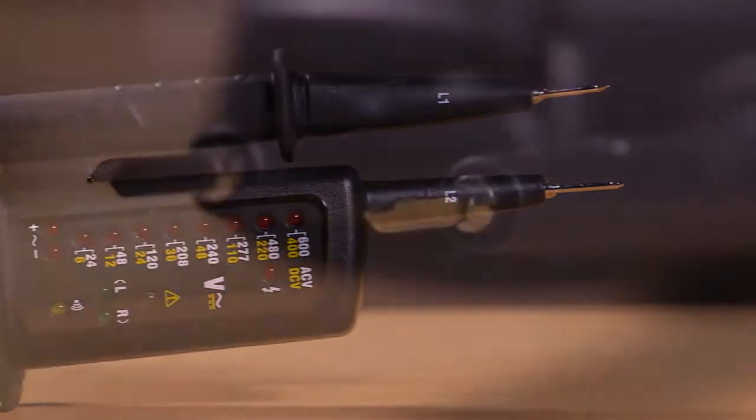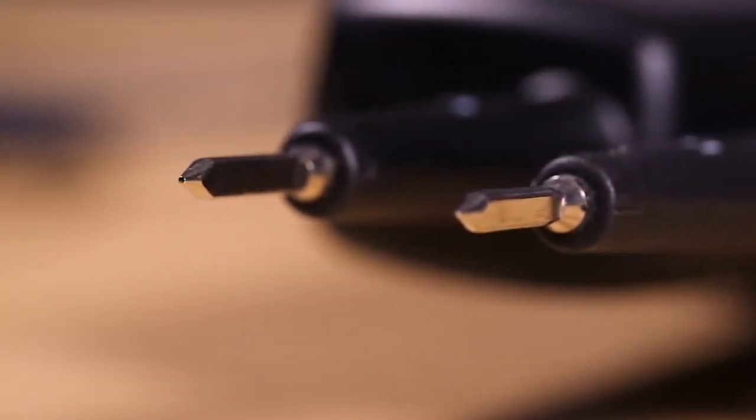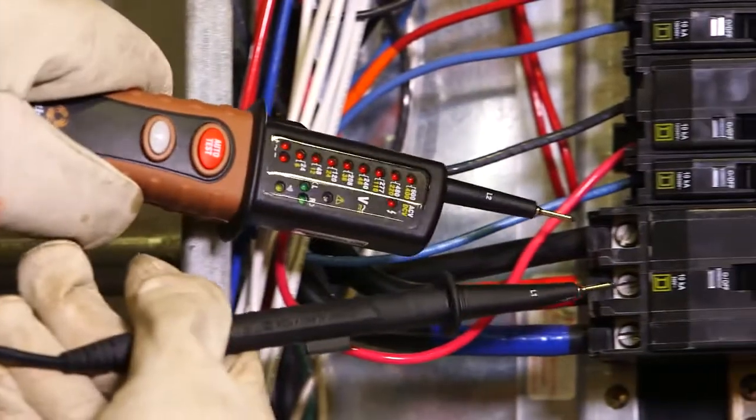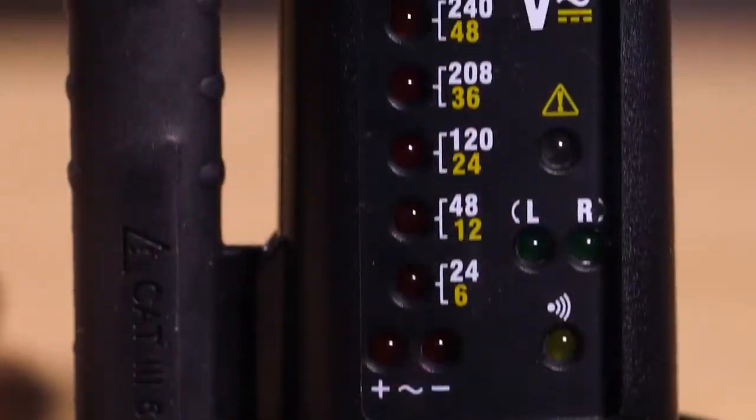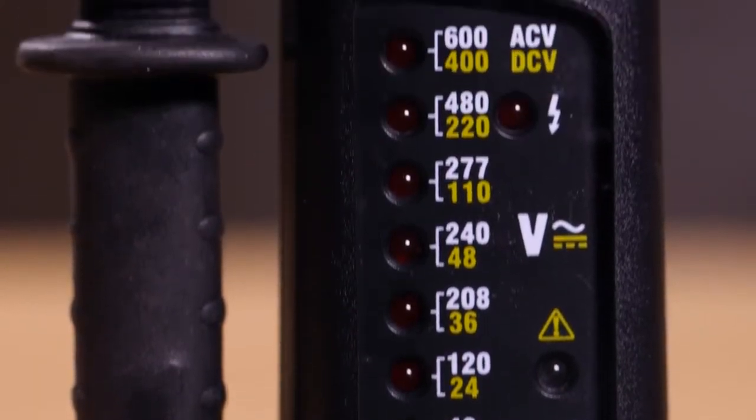Operation is fully automatic. Just touch the probes to the circuit being tested and the LEDs will glow to indicate the voltage level from 24 to 600 volts AC and 6 to 400 volts DC.